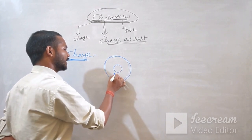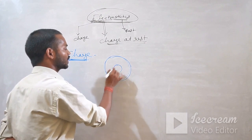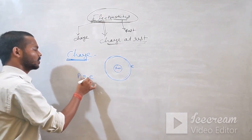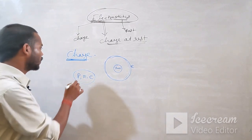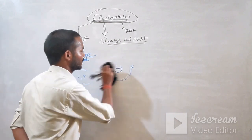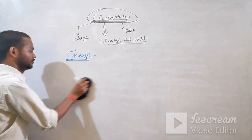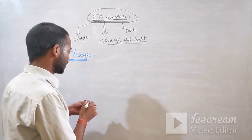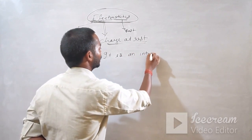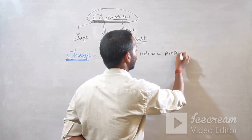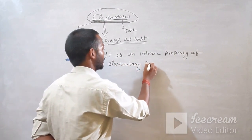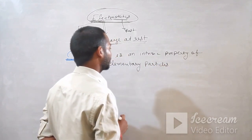Atoms have two parts: one is the nucleus, the other is the orbit. The nucleus has protons and neutrons. The charge is an intrinsic property of elementary particles — and the elementary particles are protons, electrons, and neutrons.